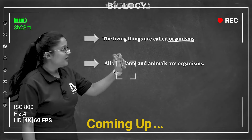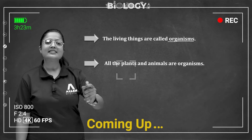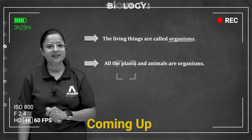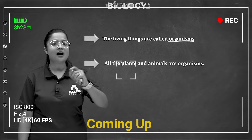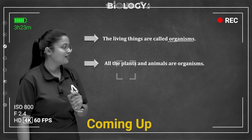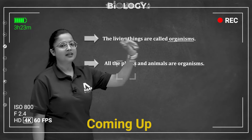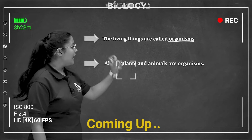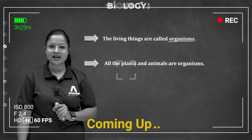We have different organs — our body is very organized, this is why we are living. Brain function, heart function, liver function. So living things are organisms, and all the plants and animals are organisms.